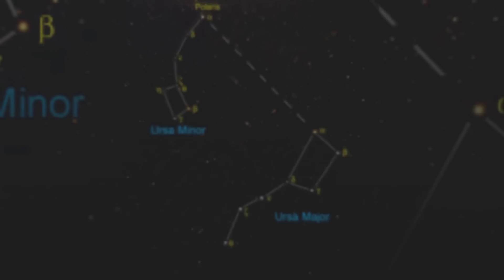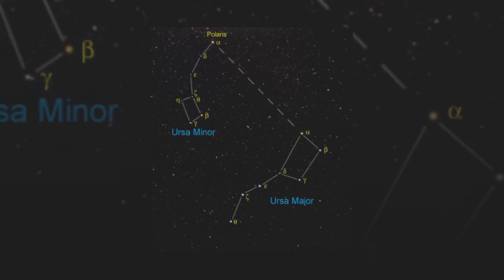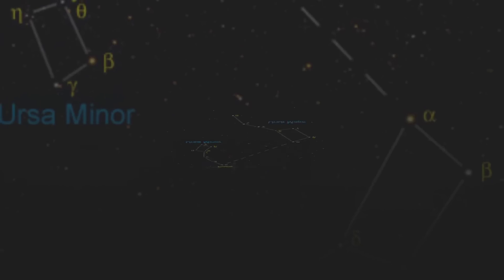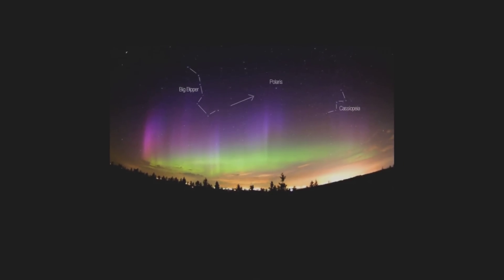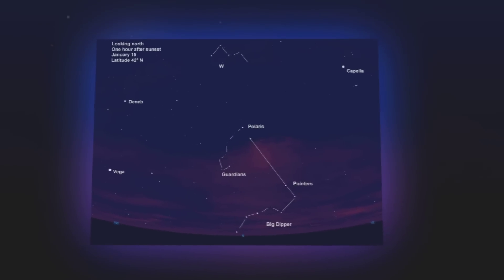To locate Polaris, all you have to do is find the Big Dipper Pointer Stars, Dubhe and Merak. These two stars outline the outer part of the Big Dipper's bowl. Simply draw a line from Merak through Dubhe and go about 5 times the Merak/Dubhe distance to Polaris.